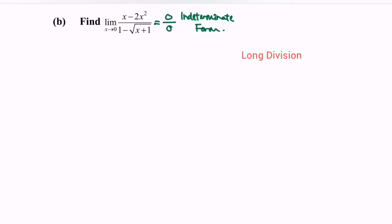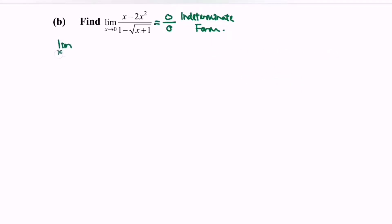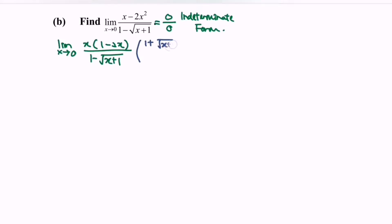My suggestion for this would be to multiply by the conjugate and at the same time factorize. Taking the limit as x approaches 0, we factor x from (x - 2x²) to get x(1 - 2x) over (1 - square root of (x + 1)), then multiply by the conjugate (1 + square root of (x + 1)) over (1 + square root of (x + 1)).